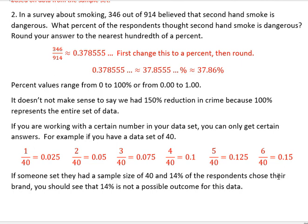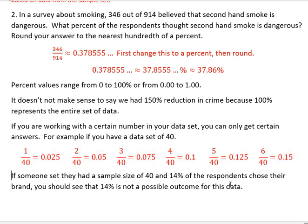So if somebody said they had a sample size of 40 and 14% of the respondents chose their brand, you should see that 14% is not a possible outcome for this data set. If we're working with 40, we're never going to get 14%. We could get 12.5%, even rounded to 13%, but the next one would be 15%. There's no way to get 14% with this data set. So be looking at that too when examining whether people may be falsifying information.